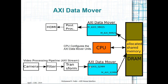Each AXI Data Mover is capable of performing both operations concurrently. It contains: one AXI slave stream port for receiving the stream interface, one AXI master memory mapped port for writing the received data into memory, another AXI master memory mapped port for reading data from memory, and another AXI master stream port for writing data to the streaming subsystem. Note that both memory mapped interfaces are AXI masters, while for streaming we have one AXI slave stream and one AXI master stream.